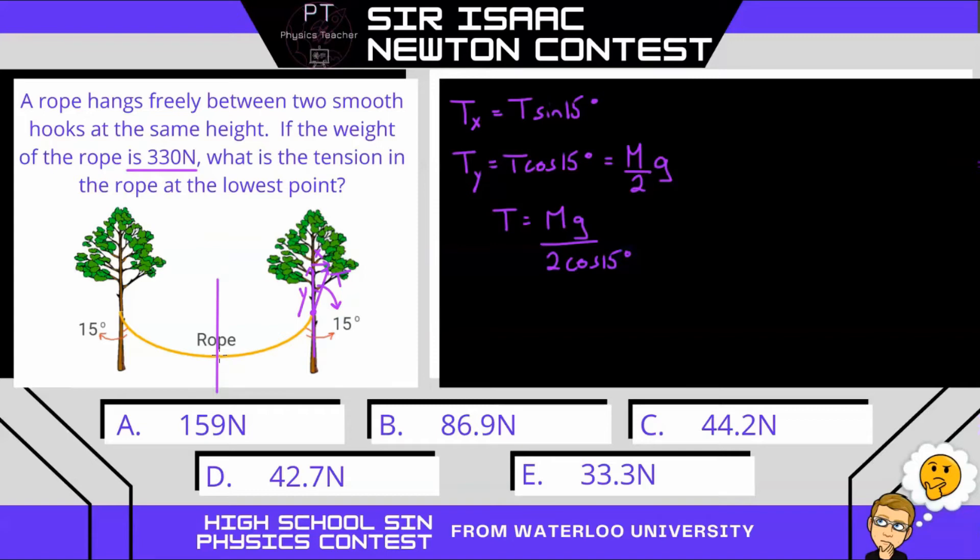Now, if we look at the lowest point right here in the rope, which is where we want to solve for the tension. At this point, the tension is going to be perfectly horizontal in this direction. Let's call this T prime. And because the system is in equilibrium, that T prime is going to equal the T x. So T prime is therefore equal to T times the sine of 15.